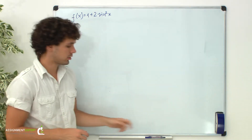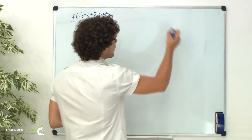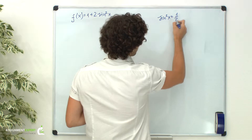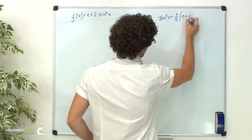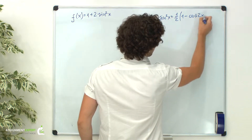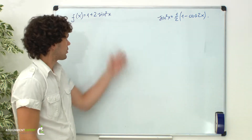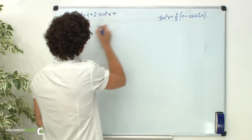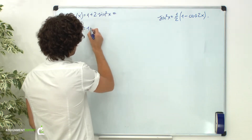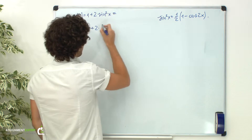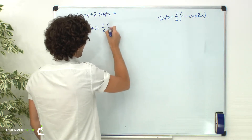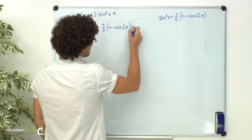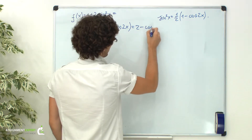Let's recall the classical trigonometric formula: sine squared of x equals one half times 1 minus cosine of 2x. Now let's transform our function using this formula. So we have 1 plus 2 times one half times 1 minus cosine of 2x, and this is equal to 2 minus cosine of 2x.